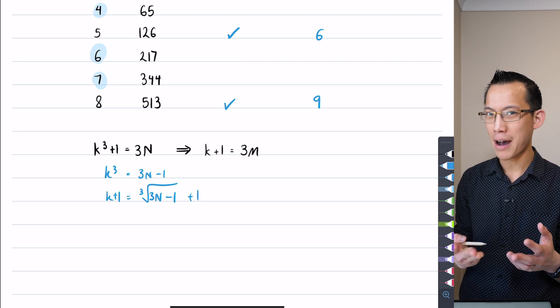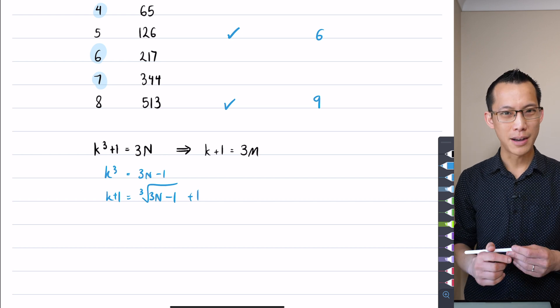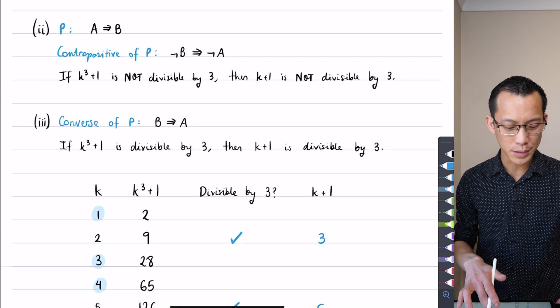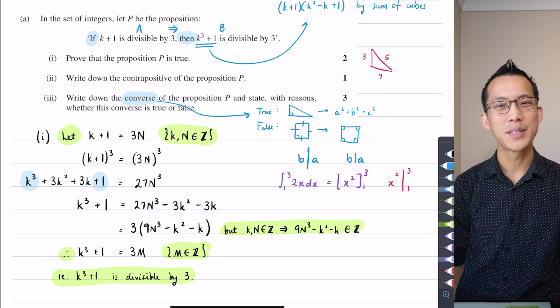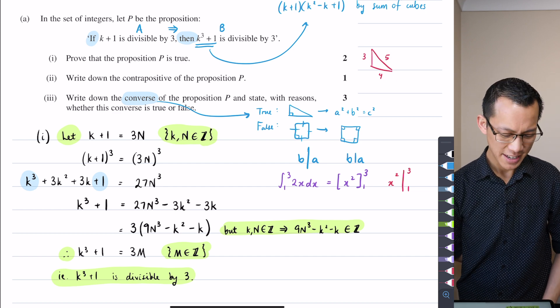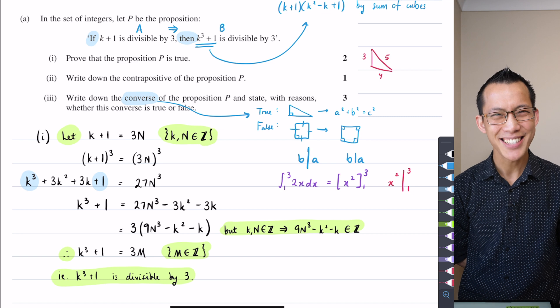So could part one or part two help us? And the answer is, go back and have a look at part two. Write down the contrapositive of the proposition P. Gee, that's sticking out like a sore thumb, isn't it?